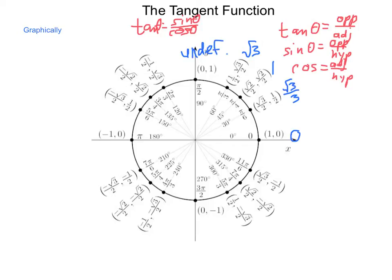And then we move into quadrant 2, where we have the same values, just our x's are negative. So, we have a negative radical 3, negative 1, negative radical 3 over 3, and 0 again.